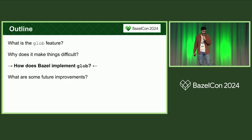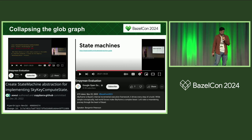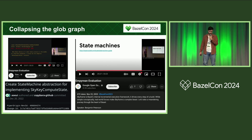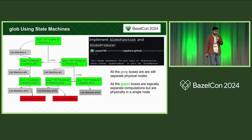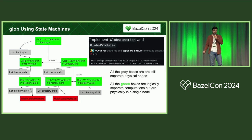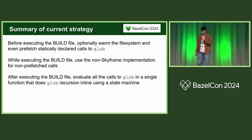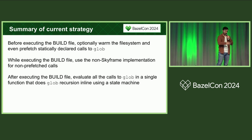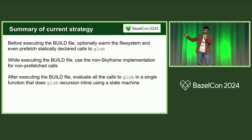So how does Bazel implement glob currently? There was major work over the last year and a half to introduce state machines into SkyFrame — work done by my teammate Shahan. And my teammate UA re-implemented the glob function in Bazel this year. It's the same high-level recursive algorithm, but implemented using a state machine. We've collapsed all the logical nodes for the recursive steps into one physical node in Bazel, and that solves the memory problem. Summary: before executing a build file we optionally prefetch globs or warm the file system; while executing we dispatch to a different mechanism for inline glob evaluation; and after executing we do all the globs for real using SkyFrame with a state machine to save memory.